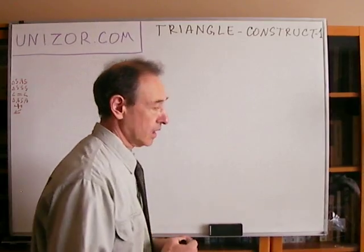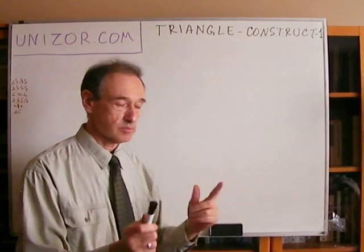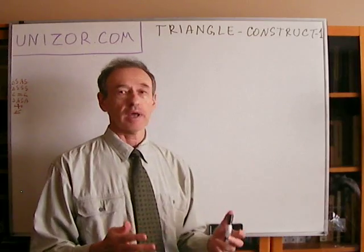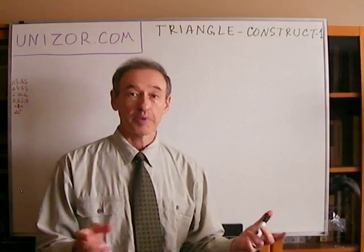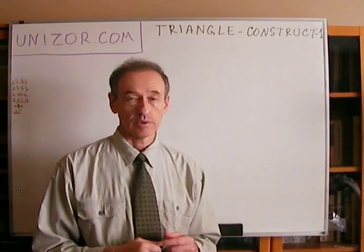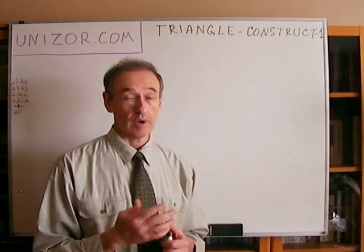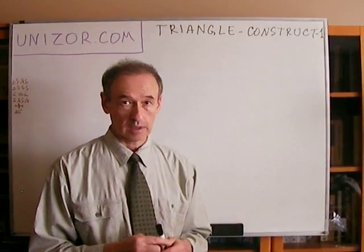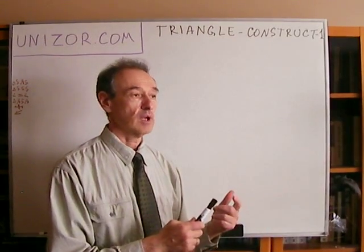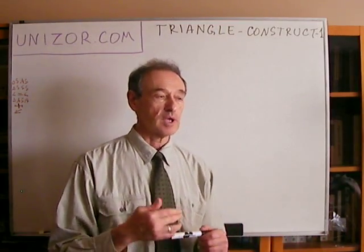Problem number one: construct a triangle by side, angle, and side — where the angle is in between the two sides. We all know there is an axiom which says that if two different triangles have congruent pairs of sides and the angle between them, then the triangles themselves are congruent. This means we can uniquely construct a triangle by knowing only two sides and the angle between them.